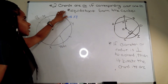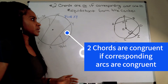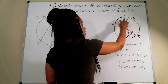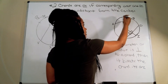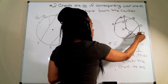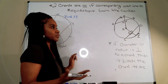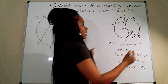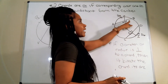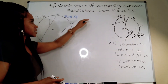The first condition: if two chords are congruent, their corresponding arcs are congruent. So if chord AB has a corresponding arc AB, and that arc is congruent to arc CD, then the chords are also congruent. For example, if both arcs were 86 degrees, that would make chord AB congruent to chord CD.